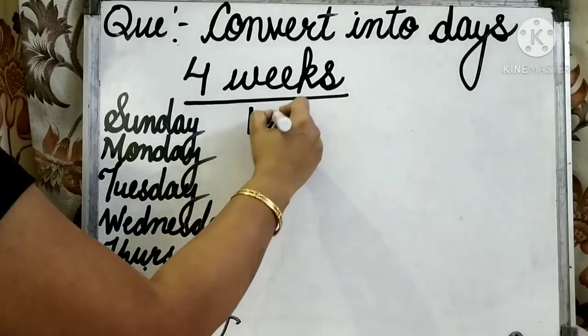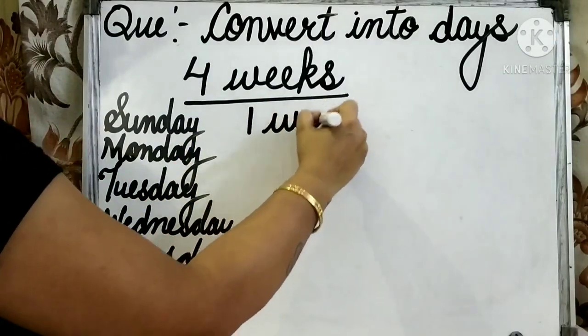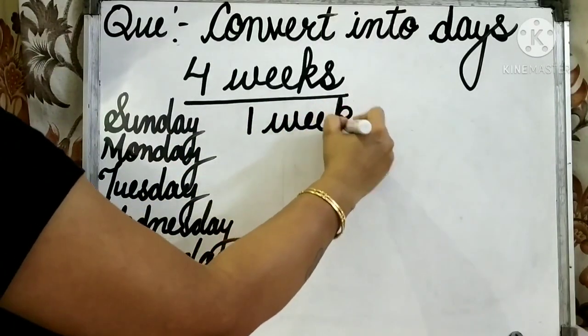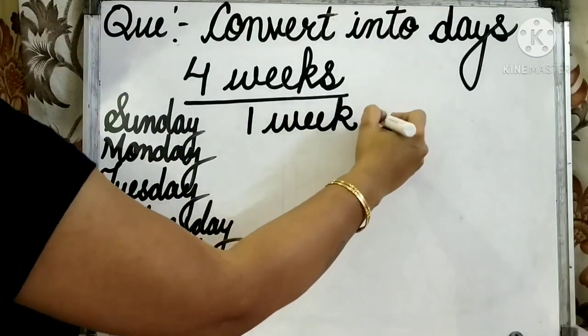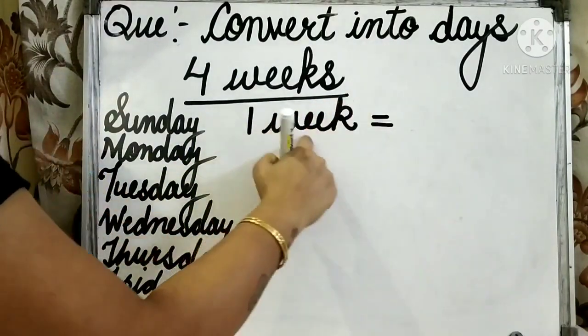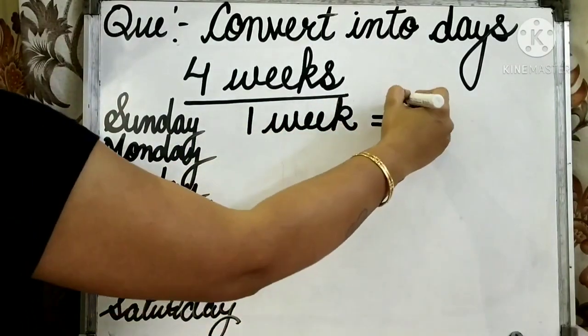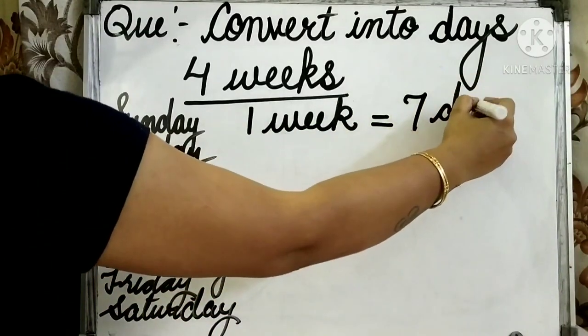So, first of all, we have to write the number of days in 1 week: 1 week is equal to 7 days.